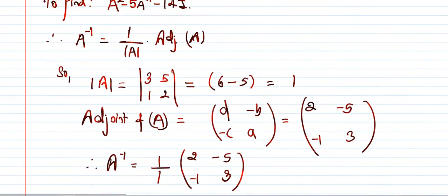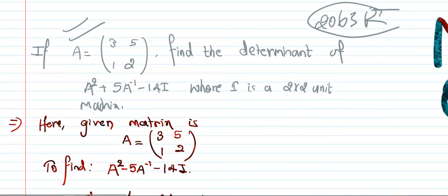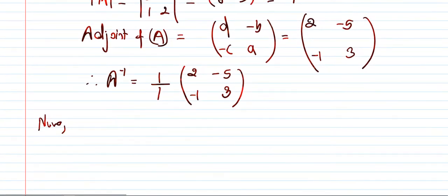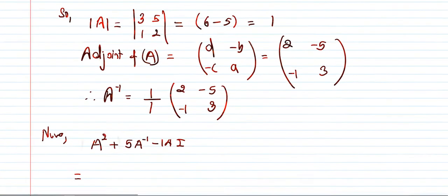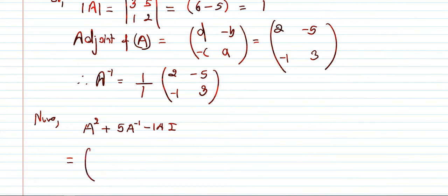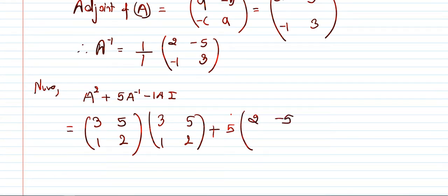Now I will calculate the expression A squared plus 5A inverse minus 14I. A squared is A times A, which is [[3,5],[1,2]] times [[3,5],[1,2]]. Then plus 5 times A inverse, which is [[2,-5],[-1,3]], then minus 14I where I is [[1,0],[0,1]].